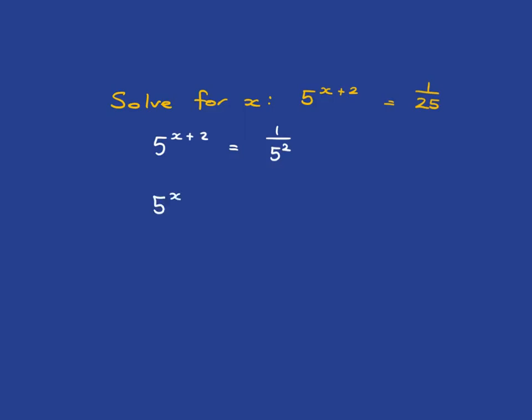Hopefully that was easy. You immediately know that 1 over 5 squared is just the same as 5 to the negative 2. That negative in the exponent just means 1 over. And now from here it's easy.